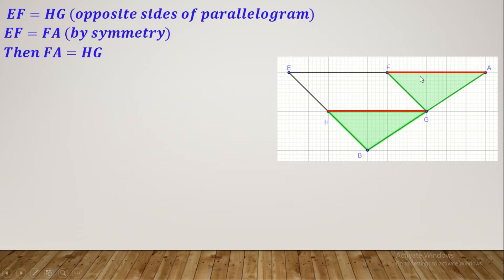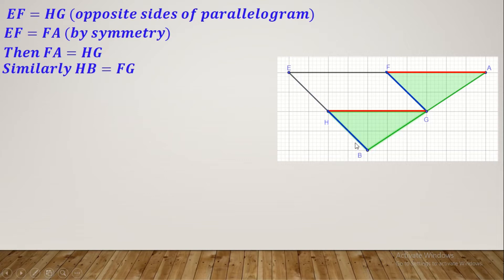We have found the first side. Now let's find the others. EH equals FG as opposite sides of the parallelogram, and EH equals HB by symmetry, so FG equals HB. Similarly, HB equals FG. Now what remains is to determine whether to use side-side-side or side-angle-side.